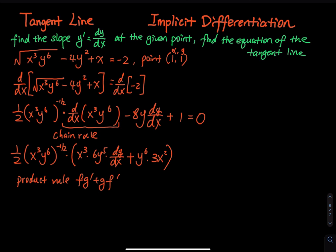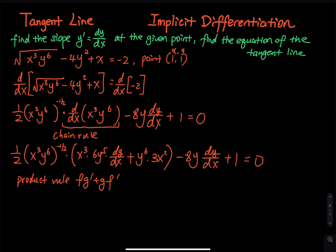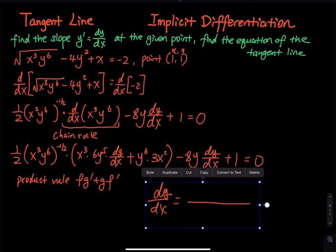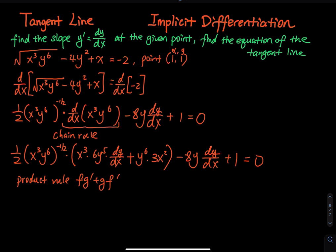Then we write the rest: minus 8y·(dy/dx) plus 1 equals zero. The derivative is now complete. You could isolate dy/dx on one side if the problem asks for it explicitly — for example if a part (a) says 'find dy/dx.' In this problem I only need the slope at the point, so instead I'll plug in x = 1 and y = 1 directly.